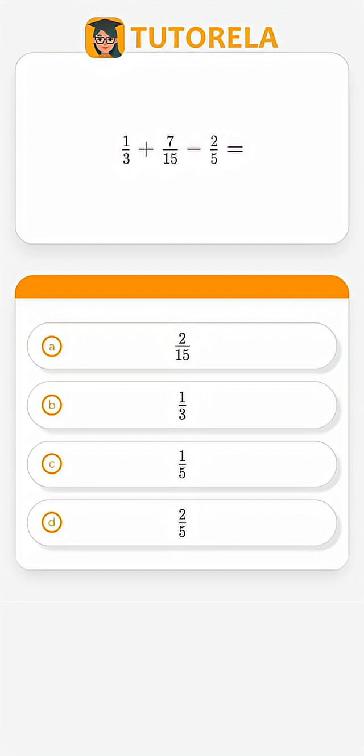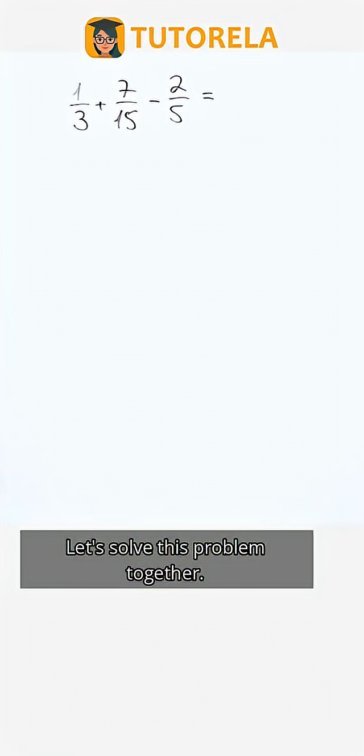What is the result of the fraction 1/3 plus 7/15 minus 2/5 equals? Let's solve this problem together.